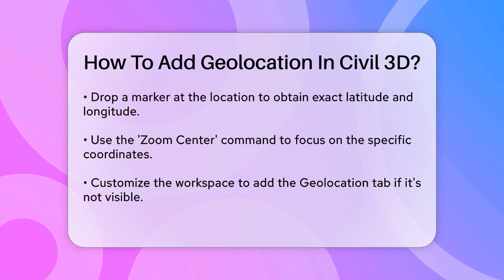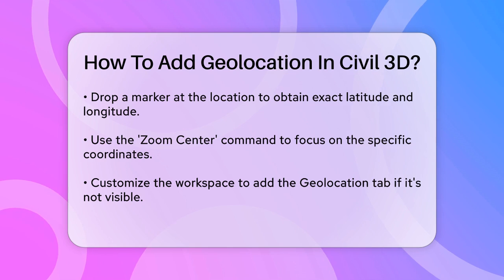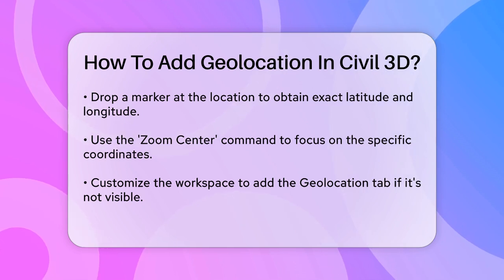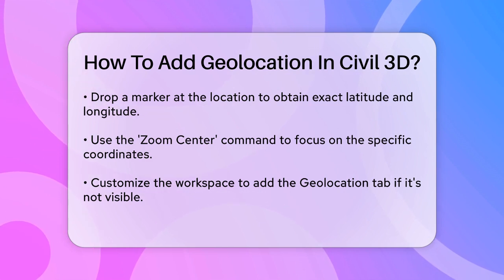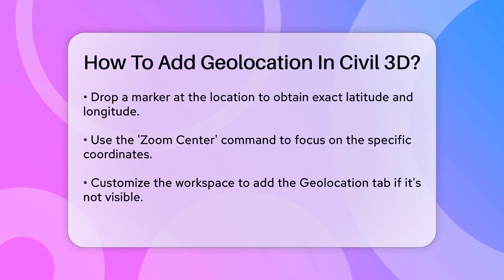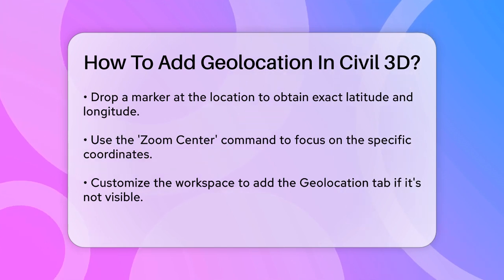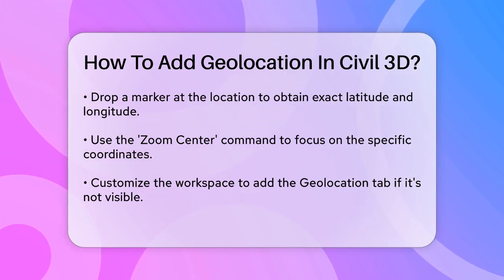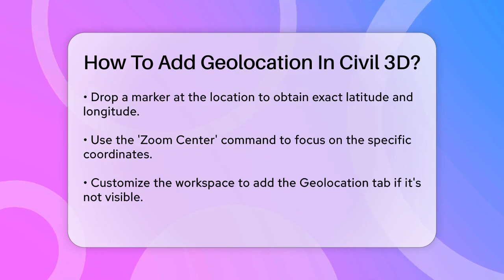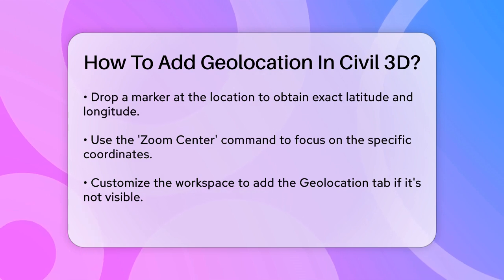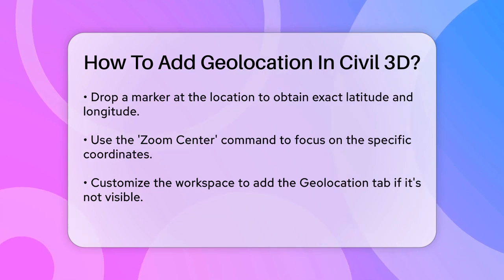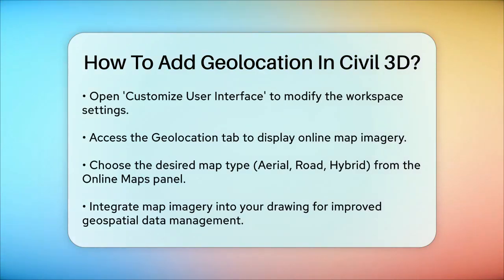Simply enter the latitude and longitude values and set the zoom magnification as needed. If you want to display online map imagery directly in your Civil 3D drawing, you can use the Geolocation tab. However, this tab might not be visible by default. To add it, you need to customize your workspace. Open the Customize User Interface dialog box, select the Civil 3D default workspace, and add the Geolocation tab from the Partial Customization Files section. This will allow you to access and display aerial, road, or hybrid maps directly within your drawing.